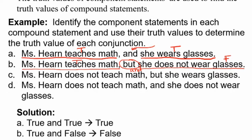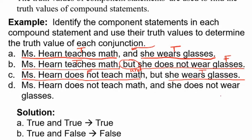Now let's look at part C: 'Miss Hearn does not teach math.' What is the truth value of that component statement? That's false because I do teach math. But 'she wears glasses' is true. So we have false 'but' true. What do you think about part C as an overall compound statement? It's false. False and true means false.